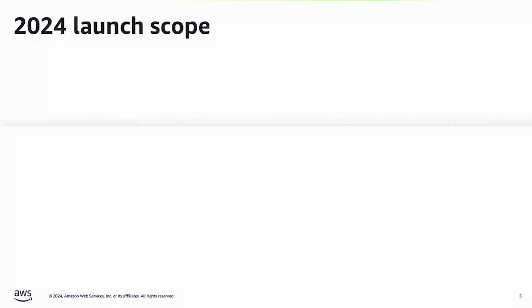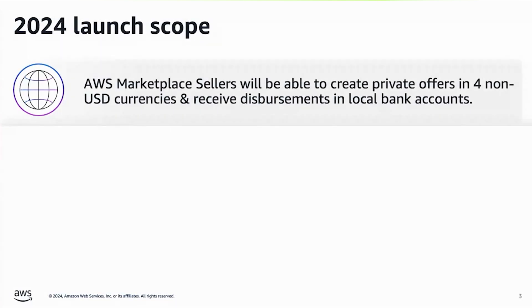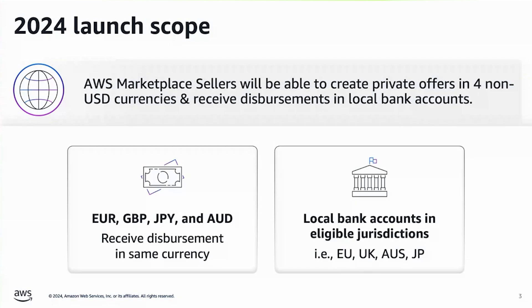Let's go over the scope of what's being launched in the remainder of 2024. We'll be enabling AWS Marketplace sellers to create offers in four additional non-USD currencies and receive disbursements in local bank accounts. More specifically, with this launch, sellers will be able to create private offers using the Euro, British Pound, Japanese Yen, and the Australian Dollar. Sellers will also be able to receive disbursements in that same currency.